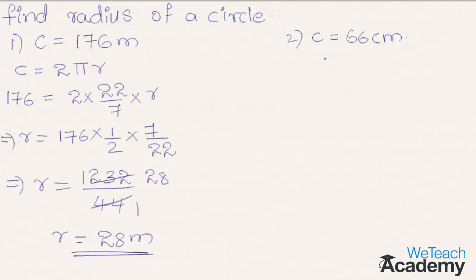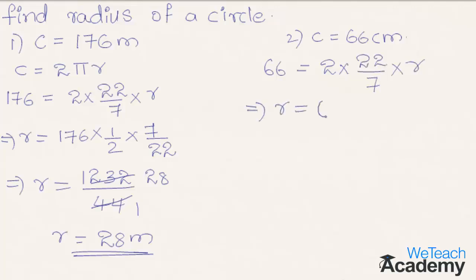Coming to the next one where circumference is equal to 66 centimeters. By substituting the given value in the formula we get 66 equal to 2 into 22/7 into r. Transferring all the terms to the left-hand side we get r equal to 66 into 1/2 into 7/22, the reciprocal of 2 and the reciprocal of 22/7.